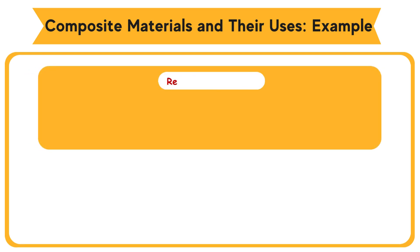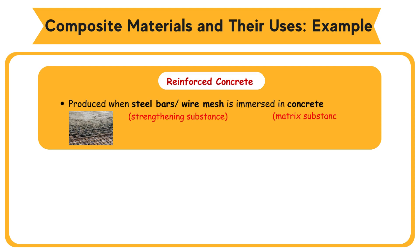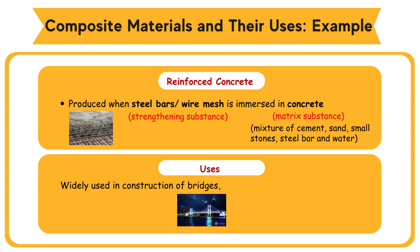Composite material has the combined strength of its original components, making it superior. Example: Reinforced concrete is produced when steel bars or wire mesh (strengthening substance) is immersed in concrete (matrix substance). Composition: concrete is a mixture of cement, sand, small stones, steel bar, and water. Uses: widely used in construction of bridges, dams, and buildings.